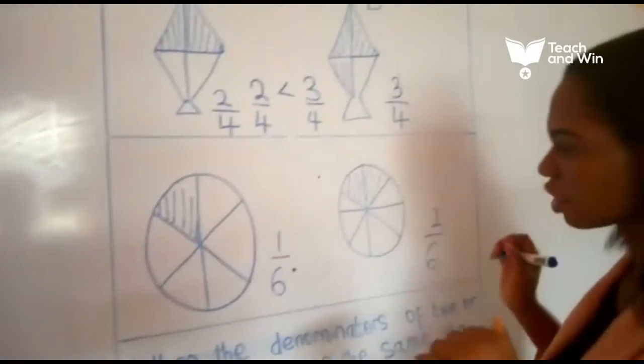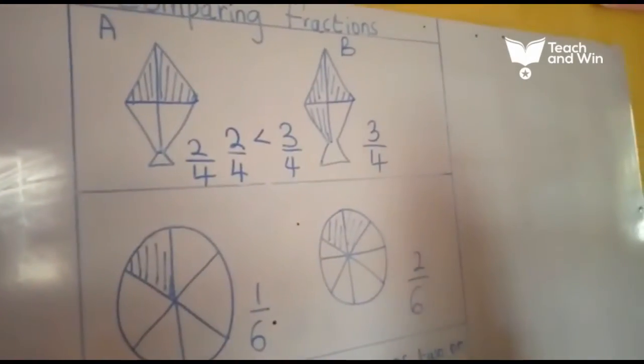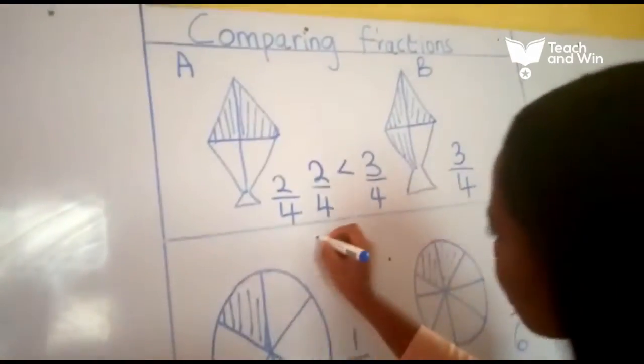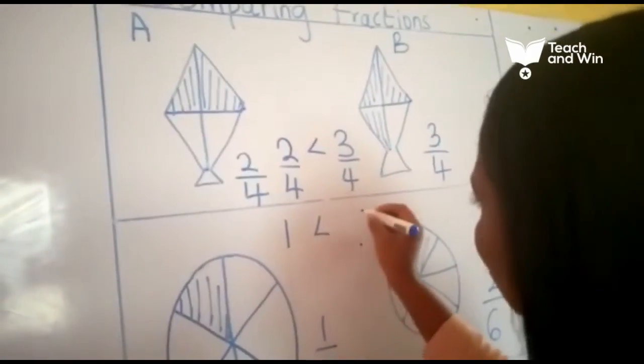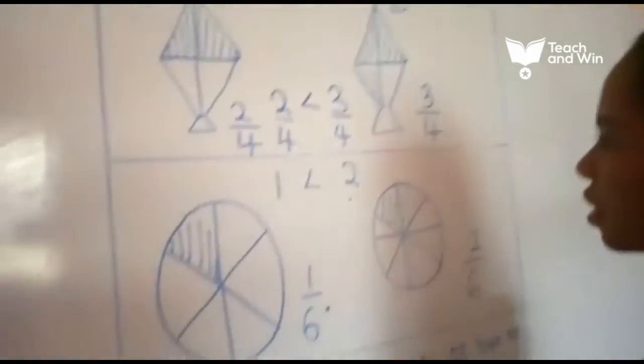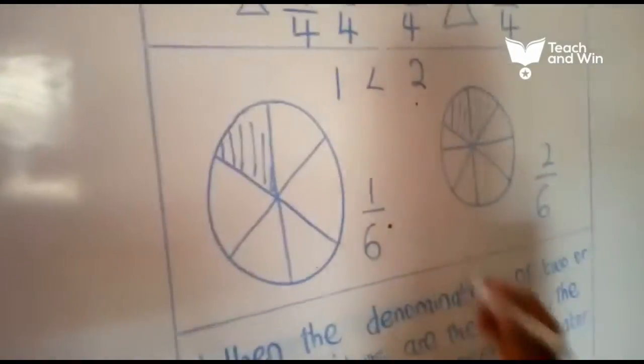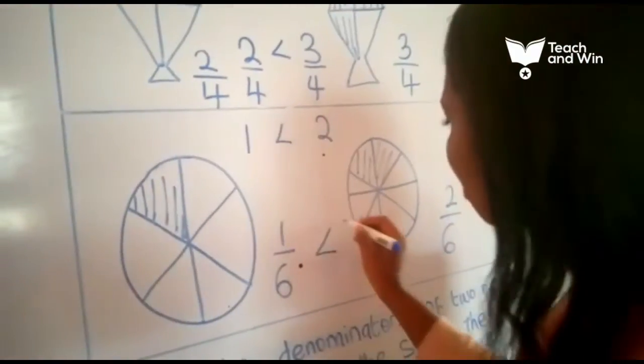So, if you are asked to compare this fraction, what are you going to do? Because 1 is less than 2, you can say that 1 over 6 fraction is less than 2 over 6 fraction.